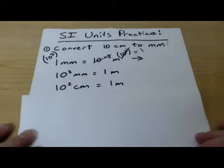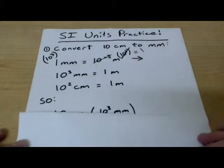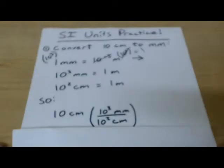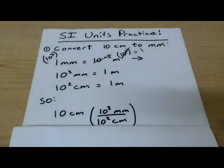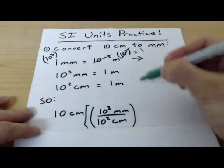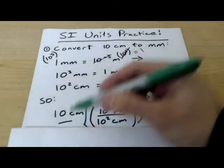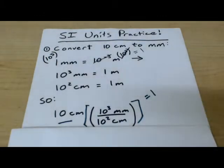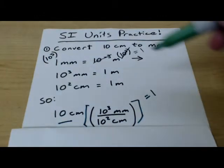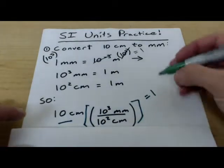And I did the same thing with centimeters. And I got ten to the second power of centimeters is one meter. So putting that all together, I start with ten centimeters. And I'm going to multiply it by ten to the third millimeters divided by ten to the second centimeters. Why did I do that? Because this whole value right here is equal to one. And so if I multiply ten centimeters by one, I'm not going to change the value. I'm just going to change the units. And so we call this one in disguise.